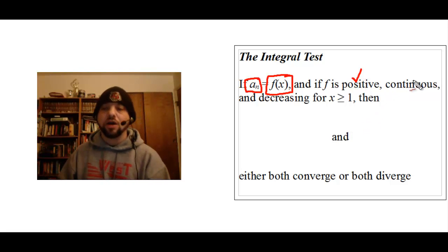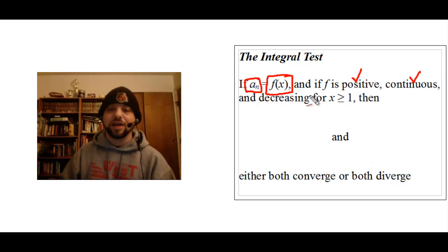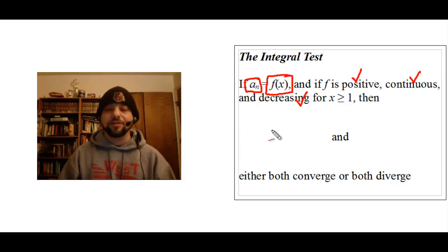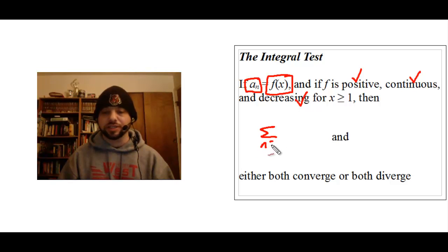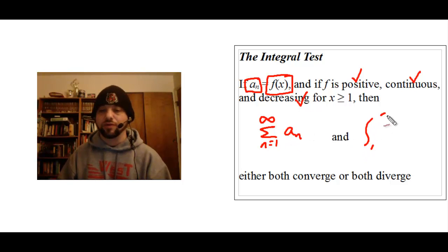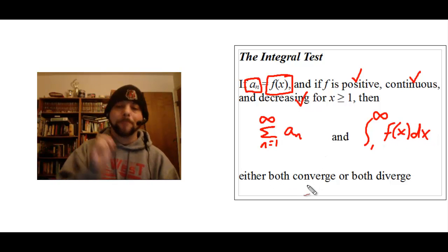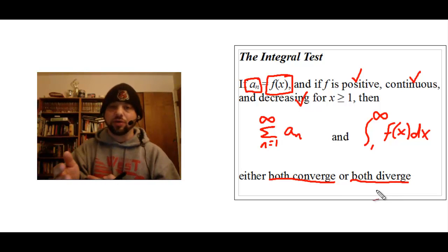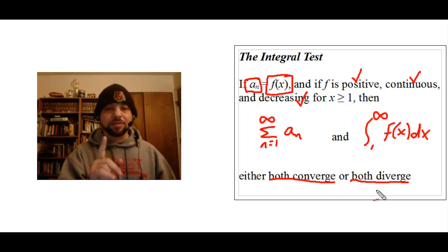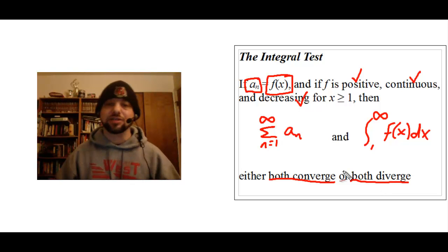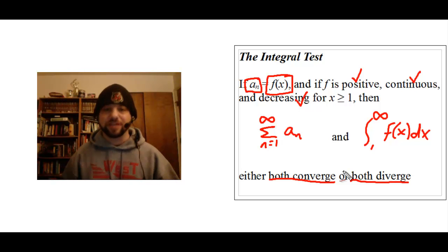Our function must be always positive, always continuous, and always decreasing for all values of x greater than or equal to 1. If that's true, then both our series and the integral from 1 to infinity of our newly created function will either both converge or both diverge. Therefore, if I can check the integral and make a conclusion about the integral, that same conclusion will be true about my original series. It's a beautiful thing, and so long as we can integrate the series reasonably well, it's a very effective test.